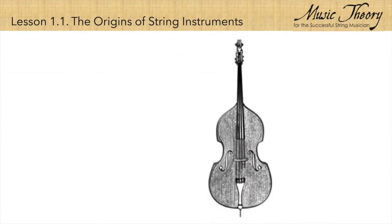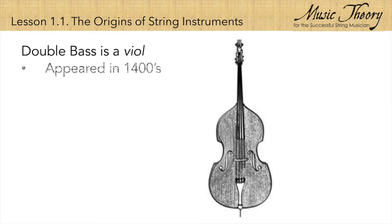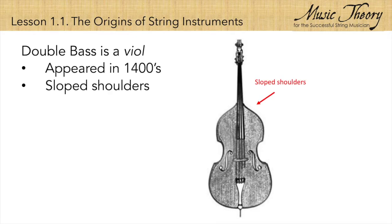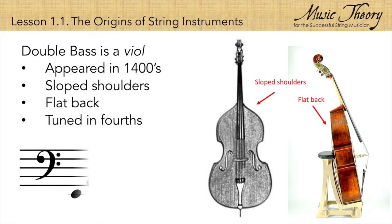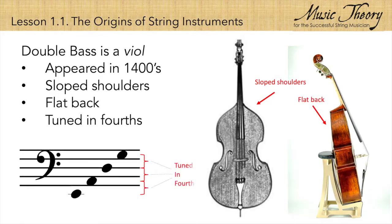The double bass comes from a family of string instruments known as viols, which is much older than the violin family. The viols appeared in the 1400s, and you'll notice they have sloped shoulders, a flat back, and they are tuned in fourths.